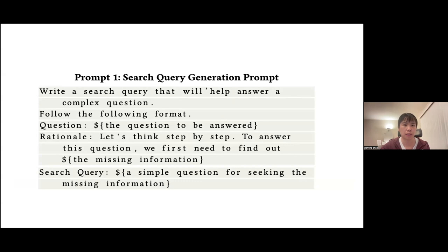Here is an example to generate such a search query. By giving a very simple instruction, write a search query that will help answer a complex question, follow the following format, and then we feed the language model the question, and then ask the language model to generate it in a chain of thought style. In this rationale part, we ask the language model to think step by step. To answer this question, we need to find out what kind of missing information, and then we will generate the final query. So this will be a simple question for seeking the missing information.